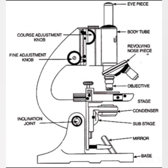Microscopes are of different types and can be classified into two major types depending on the source of illumination. The first type is the light microscope, in which light is used as the source of illumination. The second type is the electron microscope, which uses electrons as the source of illumination. In this lesson, we will focus on the light microscope — specifically the commonly used compound microscope.